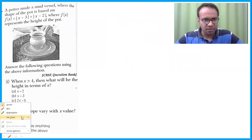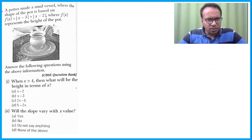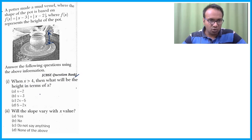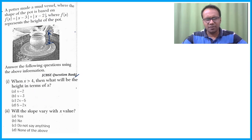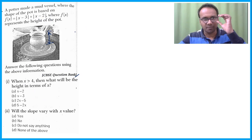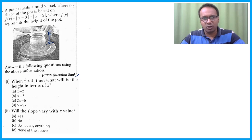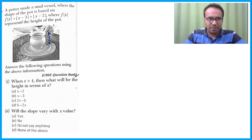Now the case study: a potter made a mud vessel whose shape is based on the function f(x) = |x−3| + |x−2|, where f(x) represents the height of the pot. Let's first open the modulus. The critical values are x = 2 and x = 3, where the definition changes. Opening the modulus is very important for Term 1 and also for Term 2 integration.